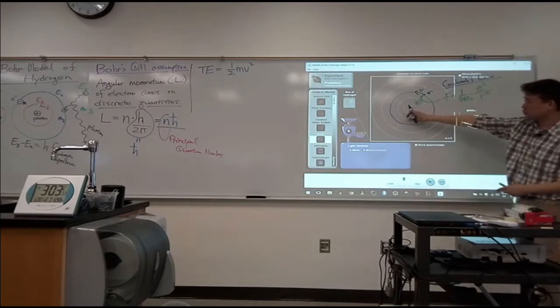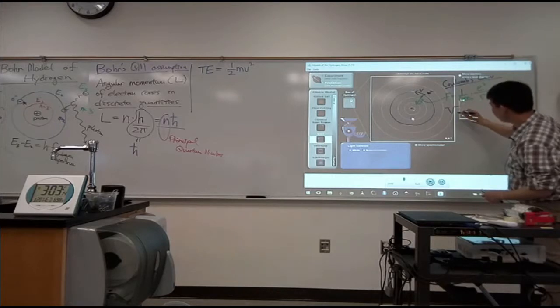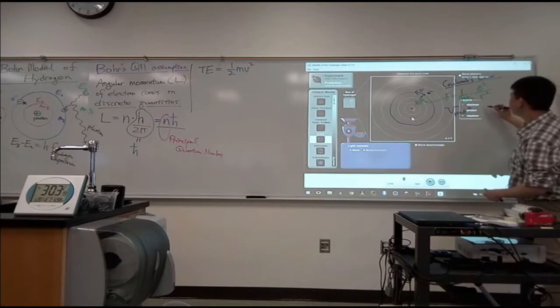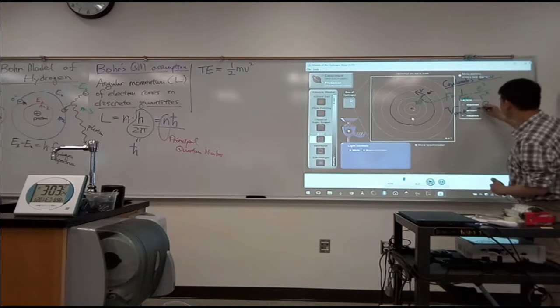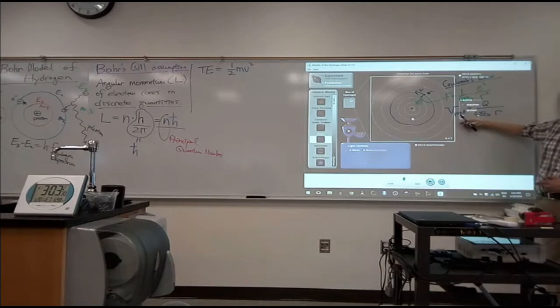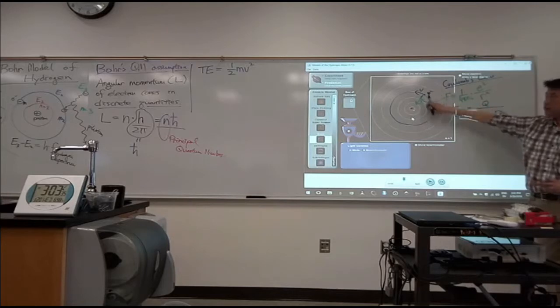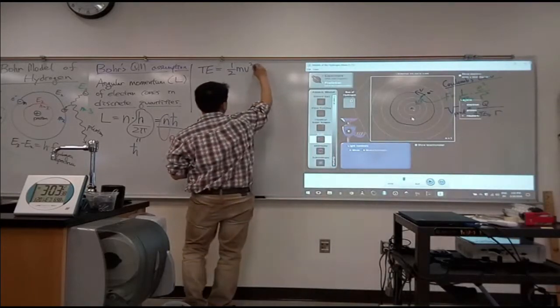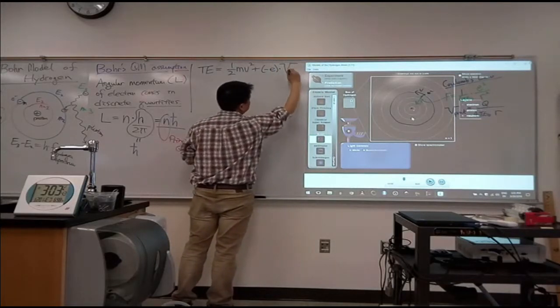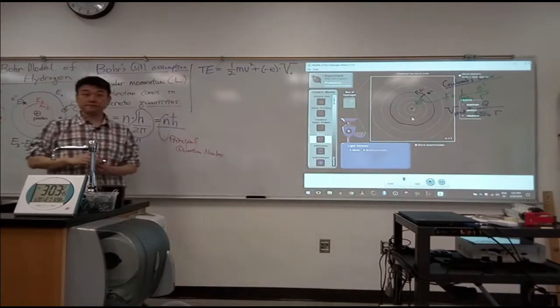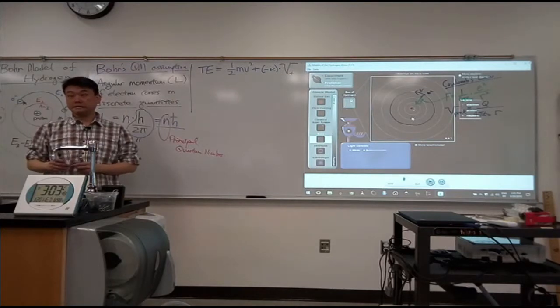And I guess you can look at it two ways. The electric potential due to a point charge that they would derive, electric potential due to a point charge, is equal to potential, that would be positive. So the amount of charge divided by 4 pi epsilon naught times the distance. Does this look familiar? Yeah.